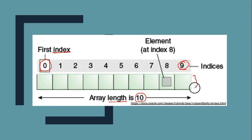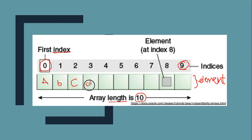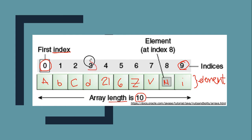This is called index, and this one is called an element. For example, I will store here A, small letter B, C, D, 2, 21, 6, Z, V, capital letter H, then I. So all of these values are called elements. So if ever I will call index 3, it will show me a value of B.